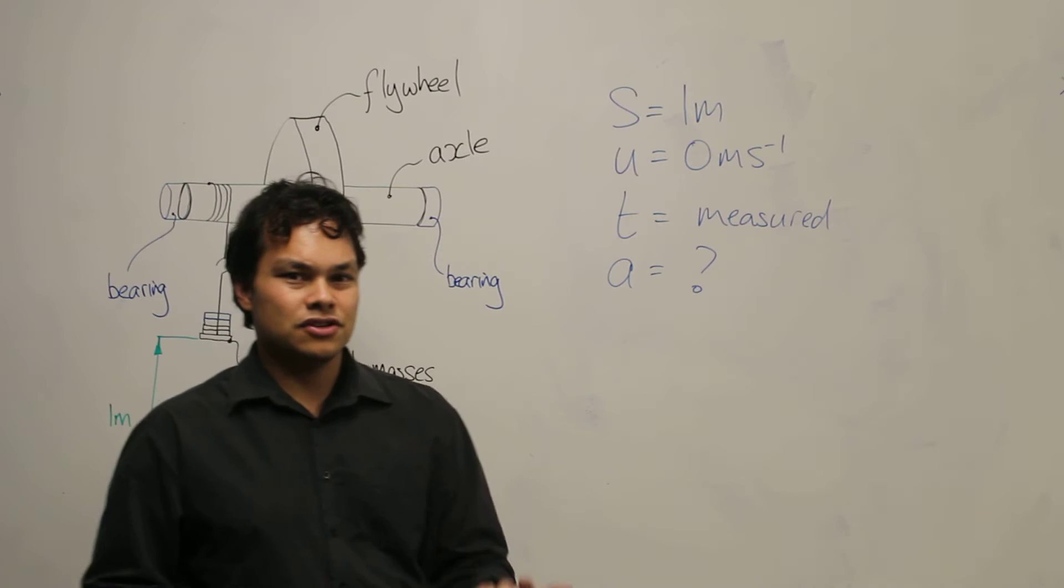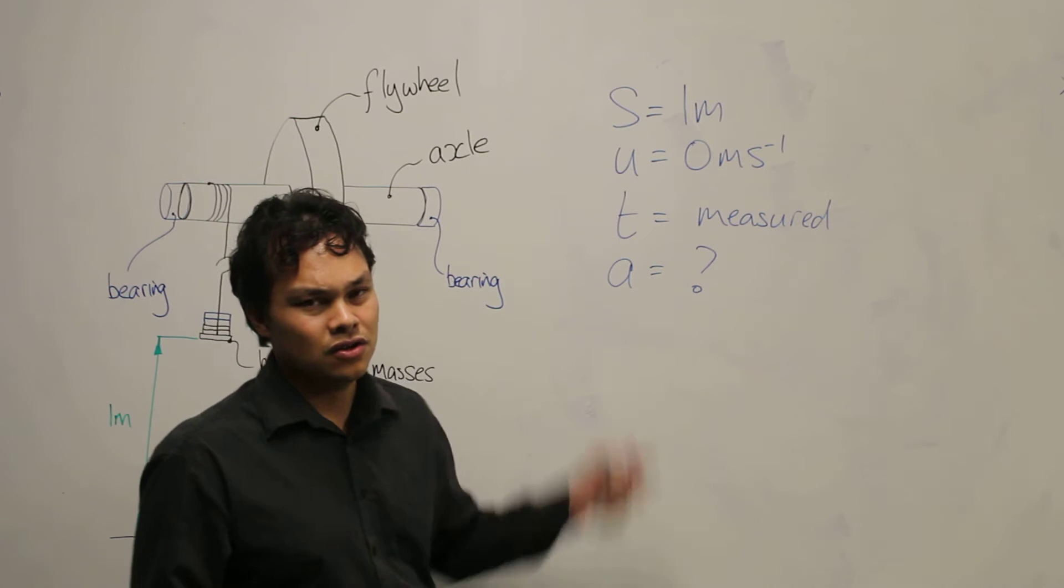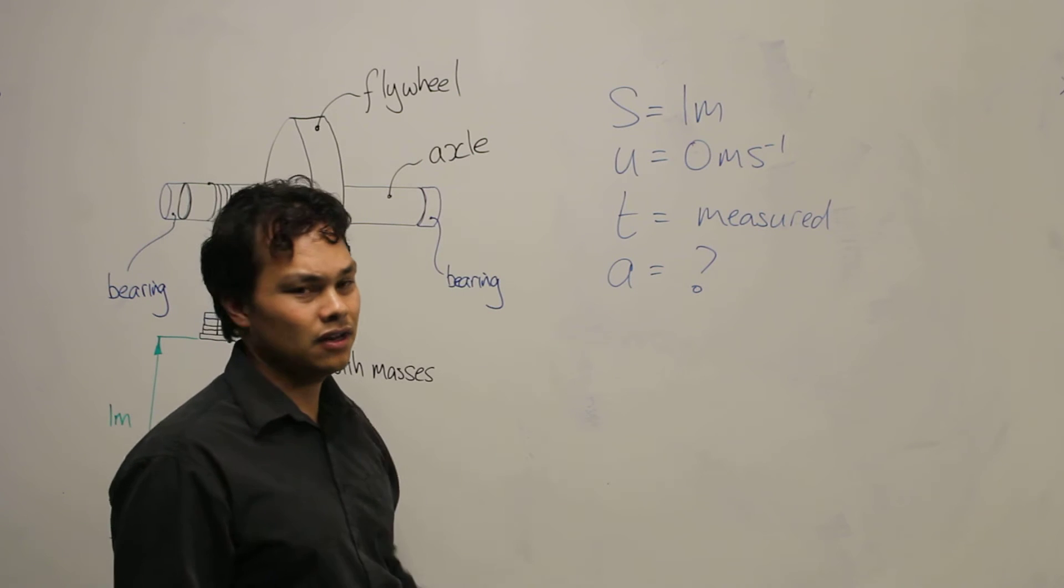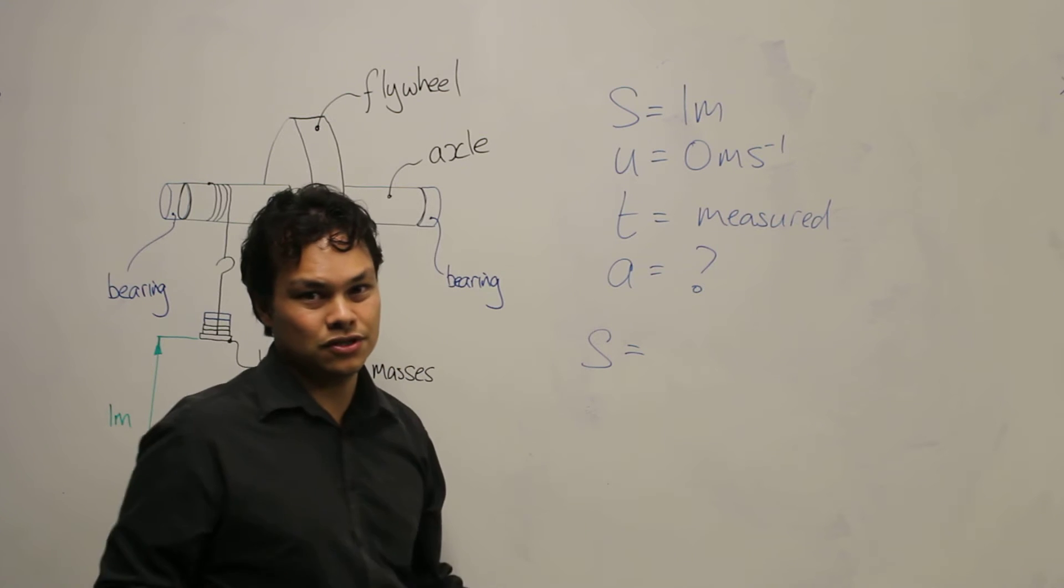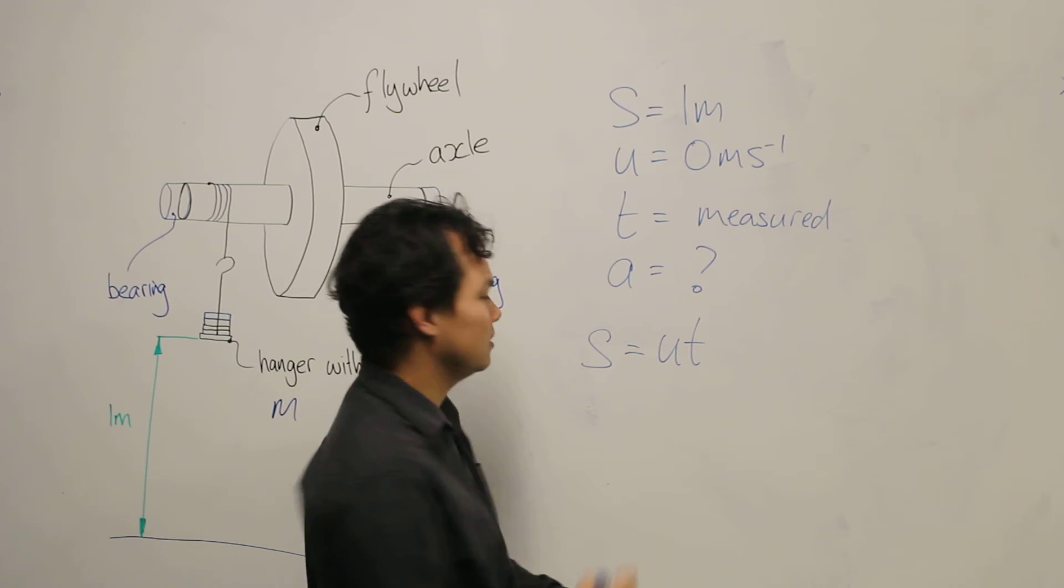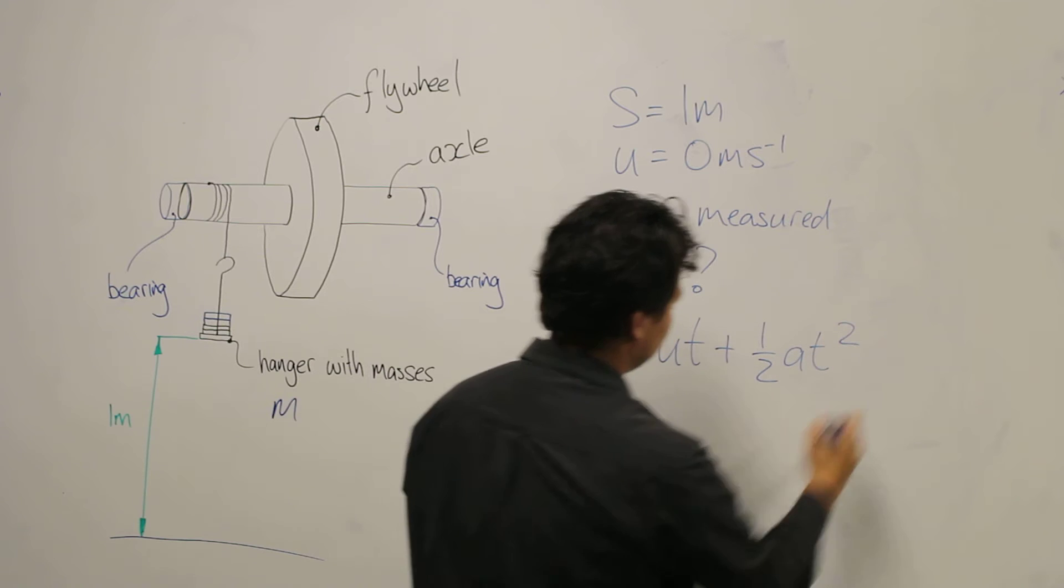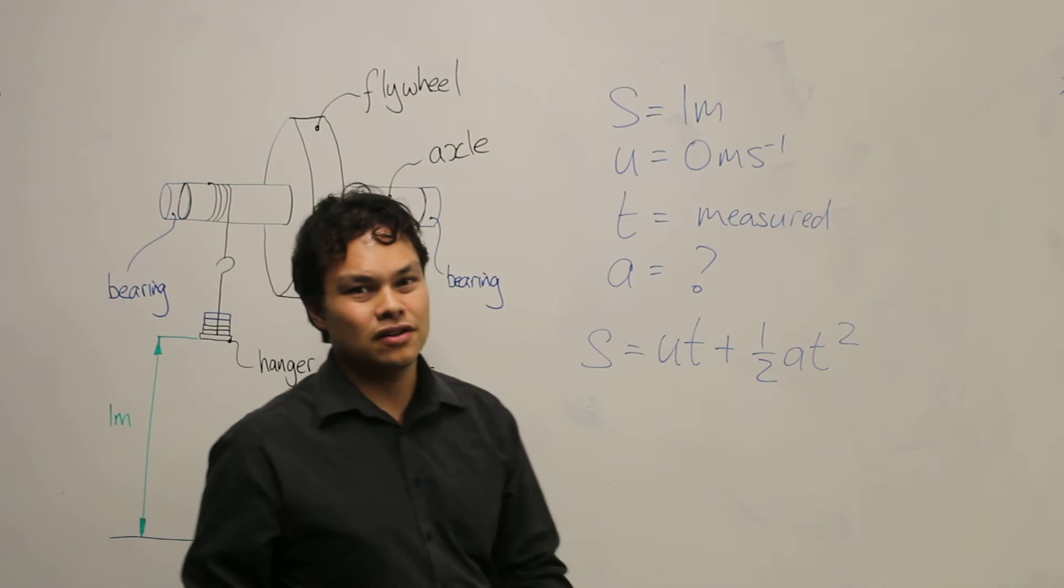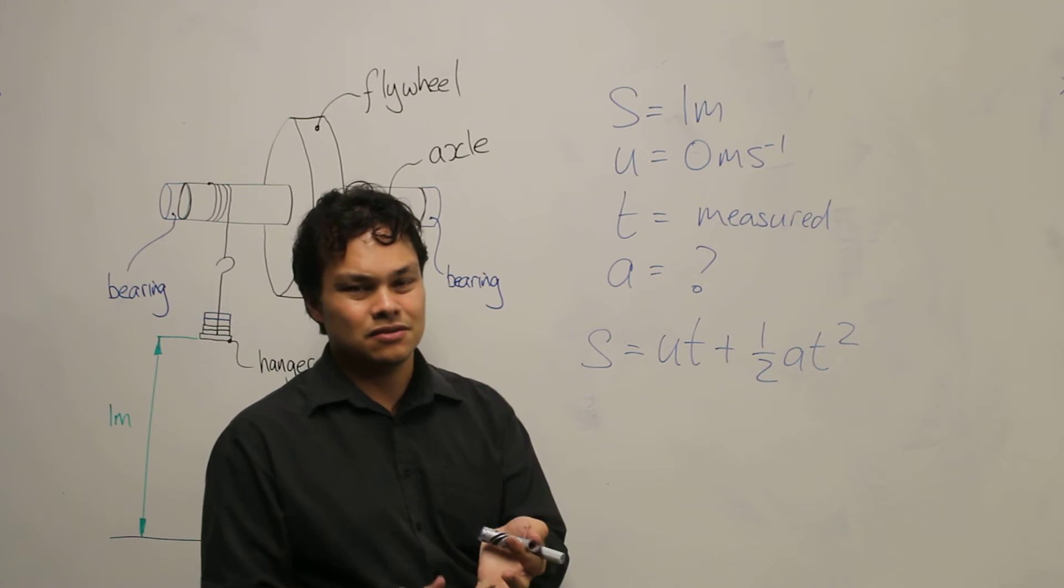And from this information we'd like to calculate the linear acceleration in order to find the angular acceleration. So we substitute this into the constant acceleration equation which has these four values. This is S equal to UT plus a half AT squared. We also know the value of U is going to be zero, so UT is equal to zero.